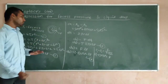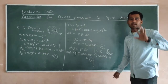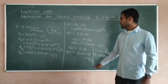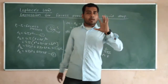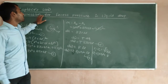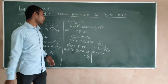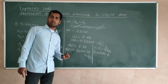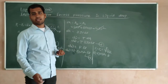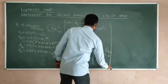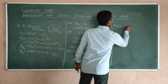Now we can see that we have two expressions for dW. The first relation is dW = T·8πr·δr (equation 3), and the second relation is dW = (Pi − Po) × 4πr² × δr (equation 4). Since the left-hand sides are equal, we can equate the right-hand sides from equations 3 and 4.